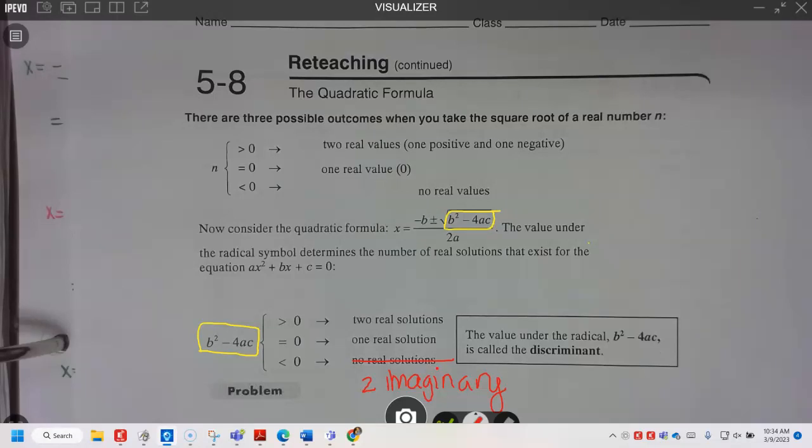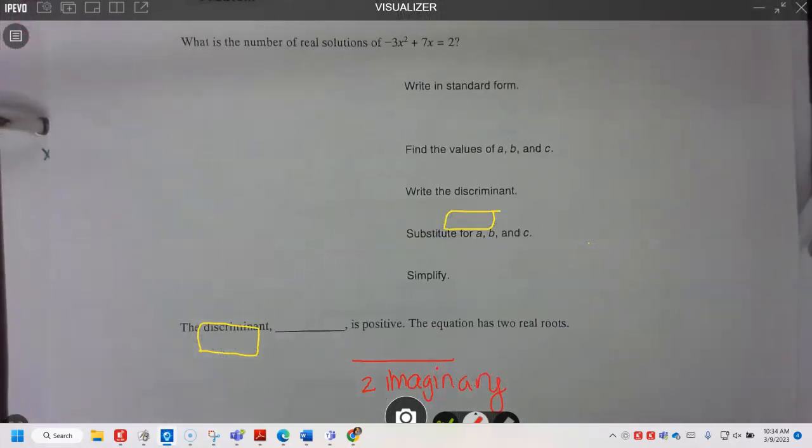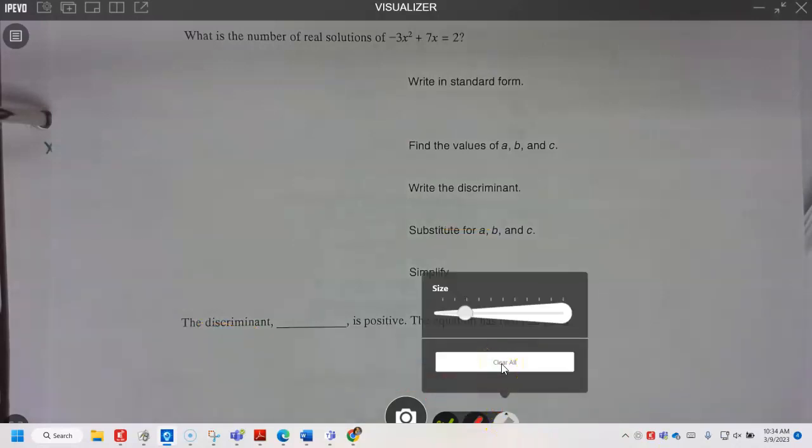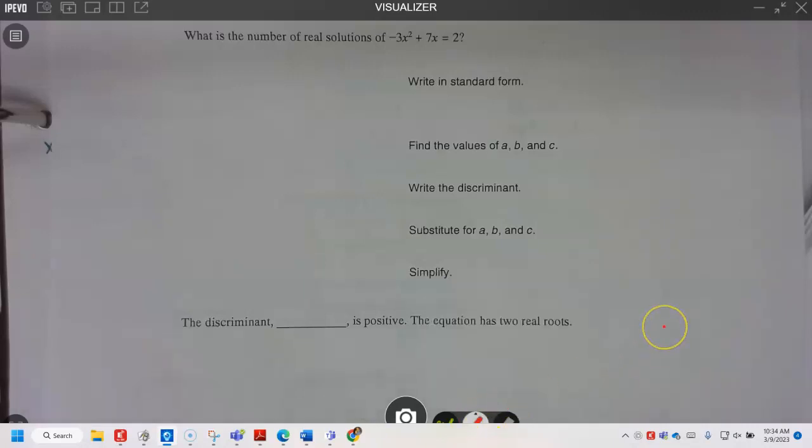Okay, let's do a practice problem that says what is the number of solutions, how do you find that? So once again we're going to go through the problem. Part 1: write it in standard form. So again remember that standard form is ax squared plus bx plus c.